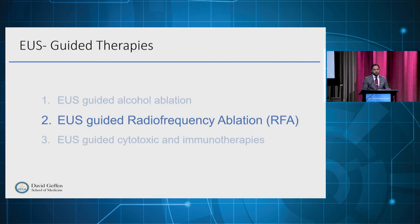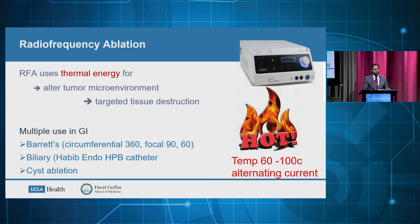Now let's switch gears and talk about EOS-guided RFA for pancreas lesions. RFA uses heat to cause tissue injury by inducing focal hyperthermia, which leads to altering the tumor microenvironment. Subsequently, this causes tissue injury by heat damage at the membrane and subcellular level.